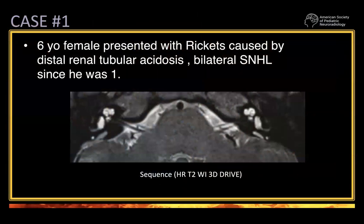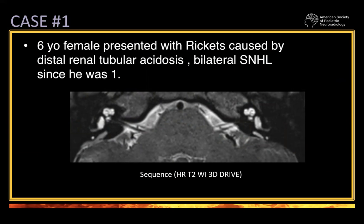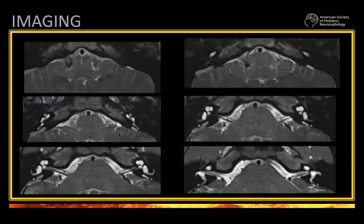Case one: this is a six-year-old female with rickets caused by distal tubular acidosis — a kidney problem — and bilateral sensorineural hearing loss since age one. This is one of the main images. Remember that the association between abnormalities in the temporal bone and other clinical or radiological associations in other organ systems is critical to making the diagnosis. I will leave you five seconds to look at the six images and identify differences at the level of the temporal bone. This is a high-resolution T2. Remember, you always need a 3D high-resolution T2 sequence.